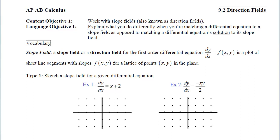The first type of problem I'm going to expect you to do with slope fields is to sketch the slope field for a given differential equation. In Example 1, the slope at any point equals the x-coordinate plus 2. The easiest slopes to draw are horizontal ones, so we ask: what values of x or y create zeros for the slope? If x equals negative 2, the slope will be 0, so we draw tiny horizontal segments there.